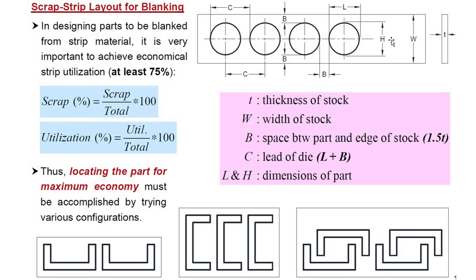So basically we try to calculate how much amount of scrap is being generated out of total strip area and how much percentage of material is being used to create the blanks, and rest of the surrounding material goes as scrap. Thus, locating the parts for maximum economy must be accomplished by trying various configurations.